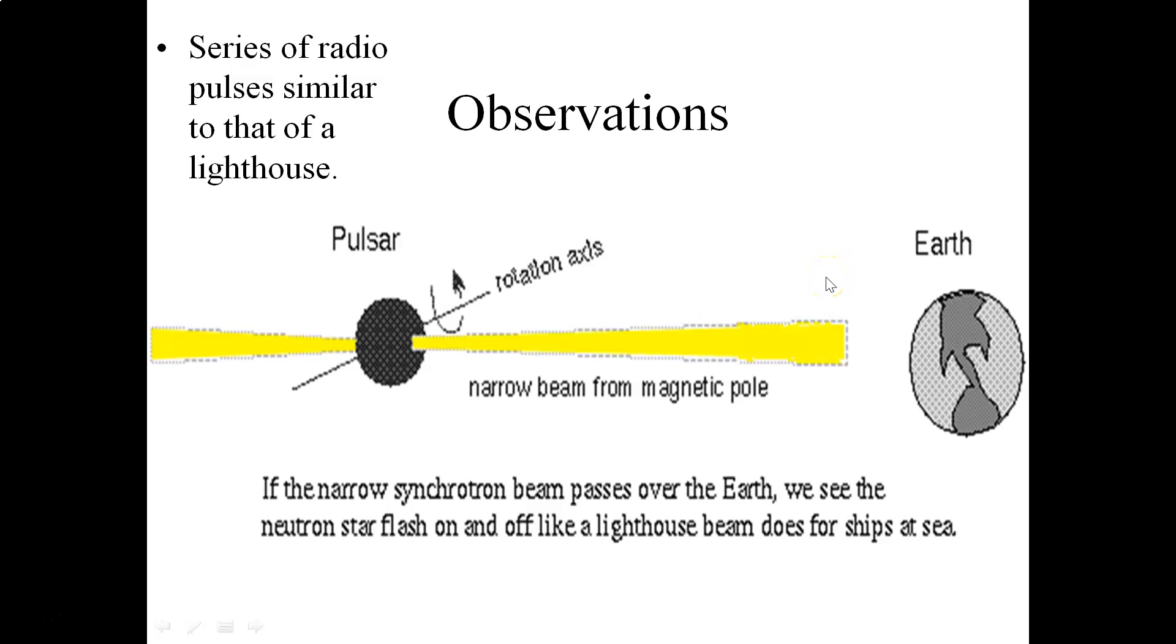So here's a simple depiction of that. It's much like a lighthouse. When you look at a lighthouse, you can only see the lighthouse beam when it sweeps over your location. We see the beam of radiation associated with the pulsar in this manner, and that's why it's referred to as a pulsar.